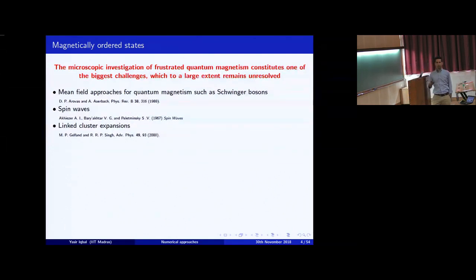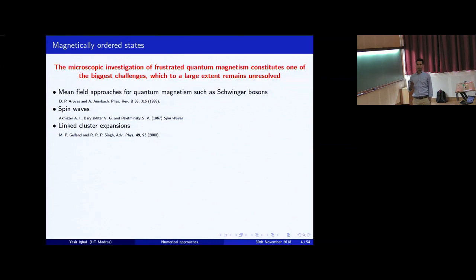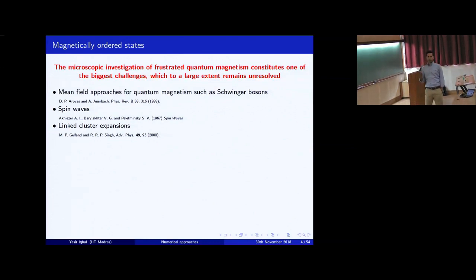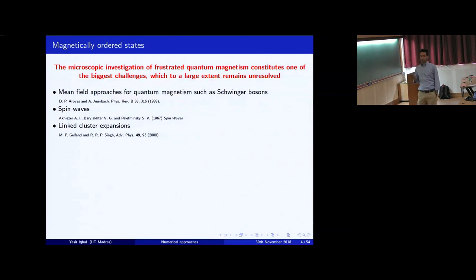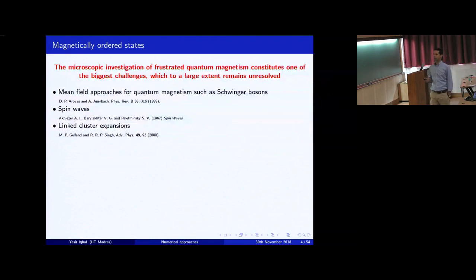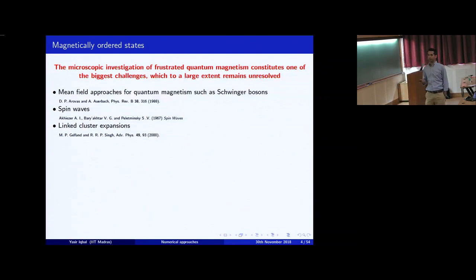You have the very powerful method of spin waves when dealing with large spin systems. This gives the first quantum corrections to the ground state energy and also the magnon spectrum. However, when you come to low values of spin, this is not able to give you very conclusive answers. And then we have linked cluster expansions, pioneered by Rajiv Singh and Gelfand. There also the problem is how to accurately capture paramagnetic behavior, which is what we are interested in.